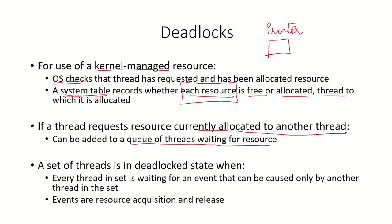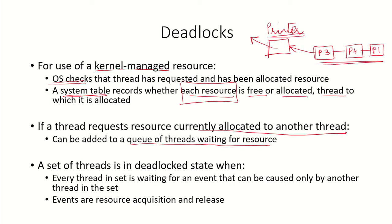For example, if there is one printer in the system and multiple threads have requested it and it is already being used by some process, all requesting processes — say process p3 — will be placed in a queue for that printer. There is a queue for each type of resource instance present in the system.